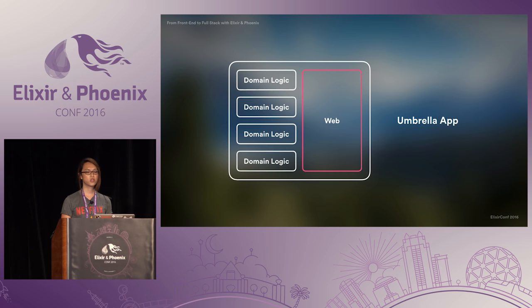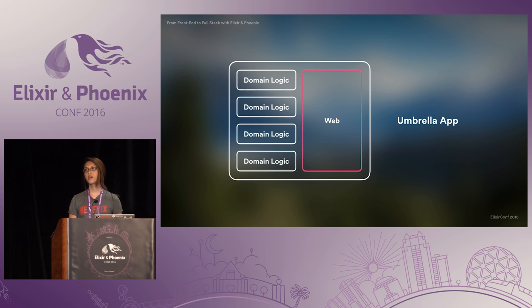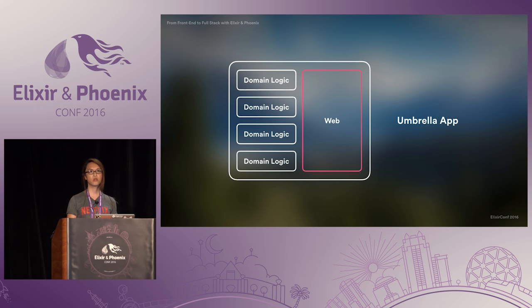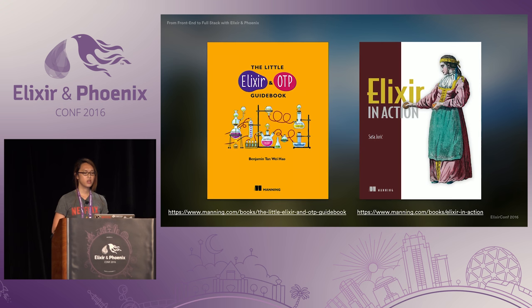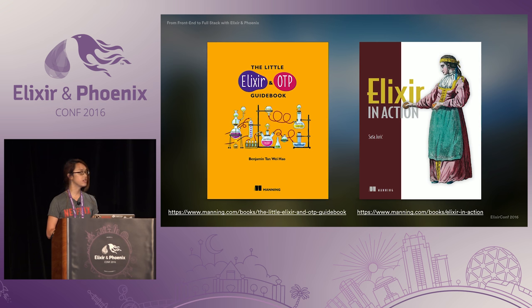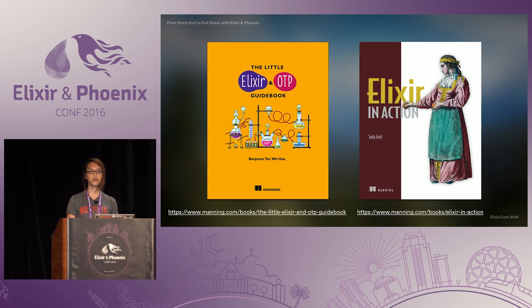The core domain logic for solving distributed problems will make use of OTP things like tasks, supervisors, and so on. Phoenix is not your application — it's only the component that exposes it through a RESTful interface. Once you're familiar with Elixir basics, I highly recommend checking out Benjamin Tan and Sasa Juric's books. They are both really good and comprehensive reads on both Elixir and OTP.